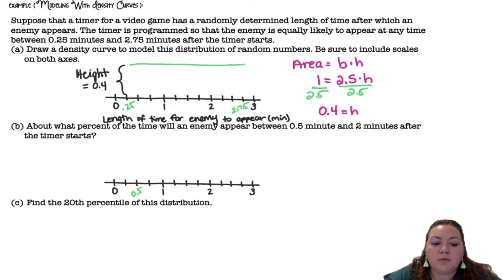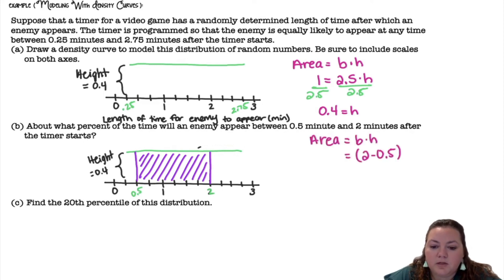About what percent of the time will an enemy appear between 0.5 minutes and 2 minutes after the timer starts? So I'm using my same model going from 0.25 to 2.75 but then I want the area between 0.5 minutes and 2 minutes. So I want this area in between.